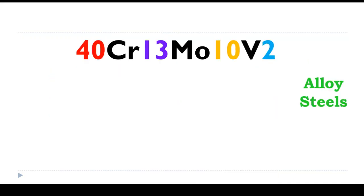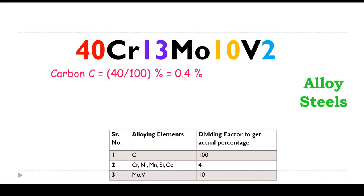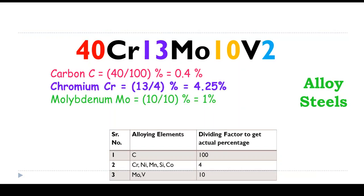40Cr13Mo10V2: 40 divided by 100 is 0.4%. Chromium is in the second table so 13 divided by 4 equals 4.25%. Molybdenum is 10 divided by 10 equals 1%, and vanadium is 2 divided by 10 equals 0.2%.